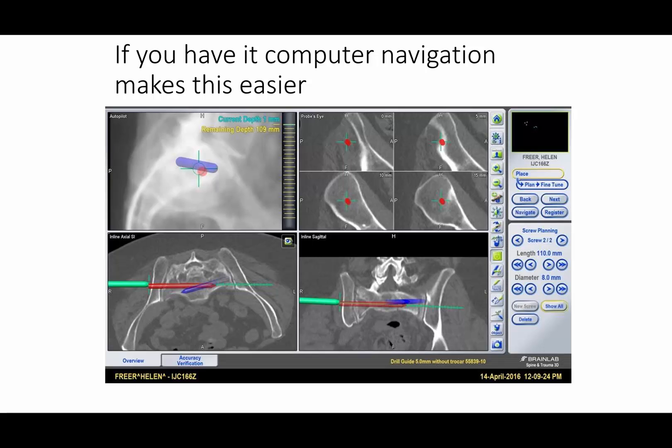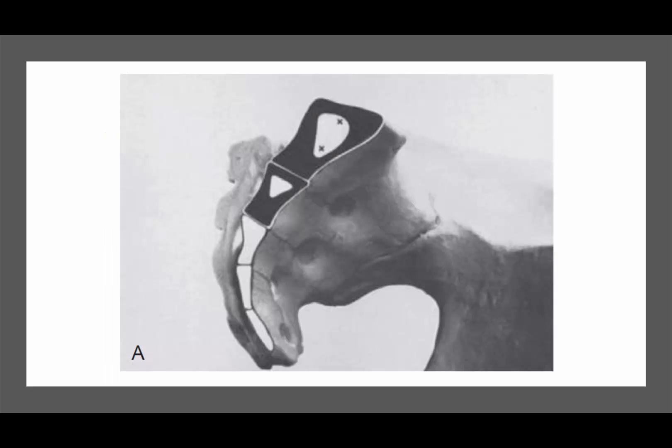If you do have computer navigation, that can make it easier. Another thing that can help is intraoperative 3D imaging, something we've been using at our center. You can place your pin and get the equivalent of almost a CT scan to see where the pin is, rather than relying on fluoroscopy images alone. Navigation allows you to safely direct your pin based on a 3D rendering of where the pin might be heading.